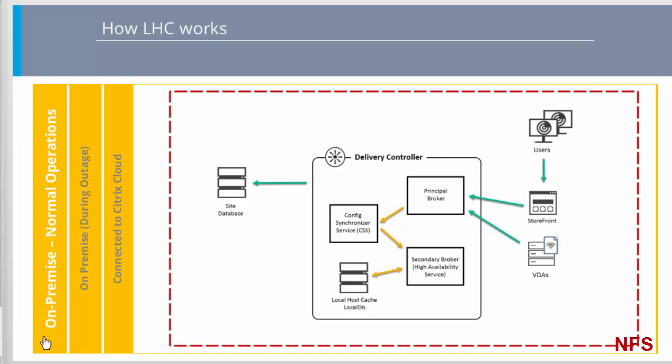The CSS ensures that the information in the secondary broker's local DB matches the information in the site database. The local DB is recreated each time the synchronization occurs. If no changes have occurred since the last check, no data is copied. From an administrative point of view, it will be useful to know that the secondary broker's role runs as a Windows service called Citrix High Availability Service. And what we've abbreviated in the diagram as Config Sync, or the Configuration Synchronizer, runs as a Windows service called Citrix Config Synchronizer Service.